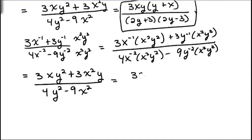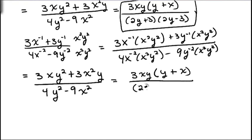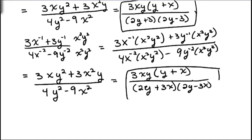On the top, we factor out our 3xy and we'll be left with y plus x. And on the bottom, we can factor the difference of two perfect squares as 2y plus 3x times 2y minus 3x. So again, it doesn't matter which one of these two methods you use — either one is just fine, use whichever one you're more comfortable with. And that's it for this part. I hope you're having a great week, and let me know if you have any questions. Thanks!